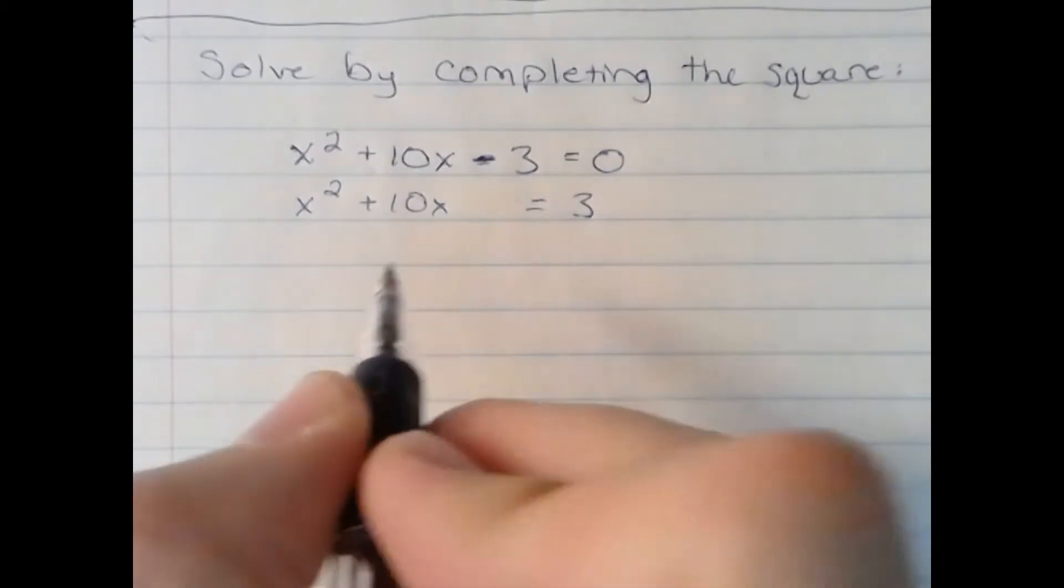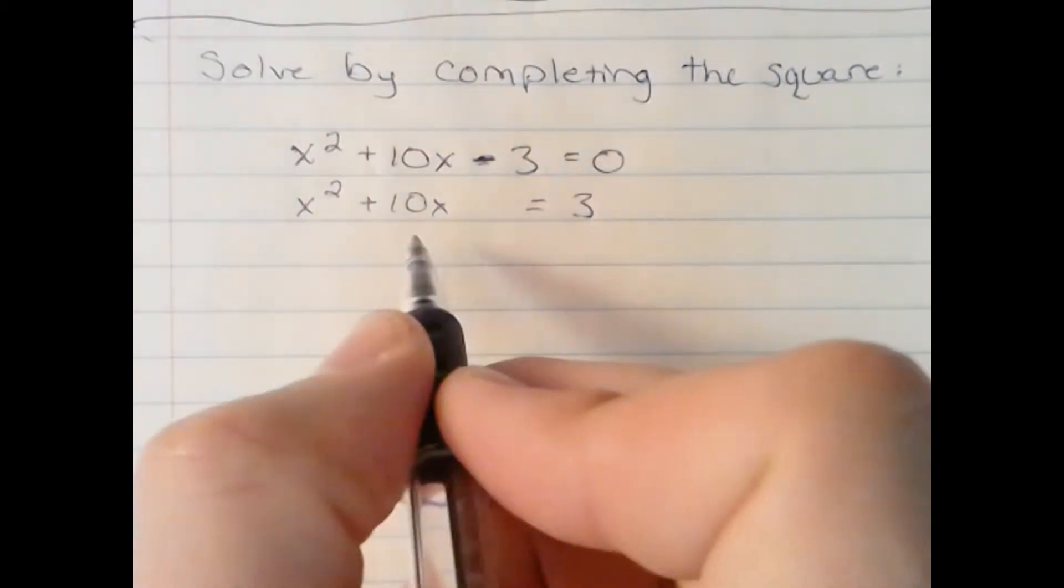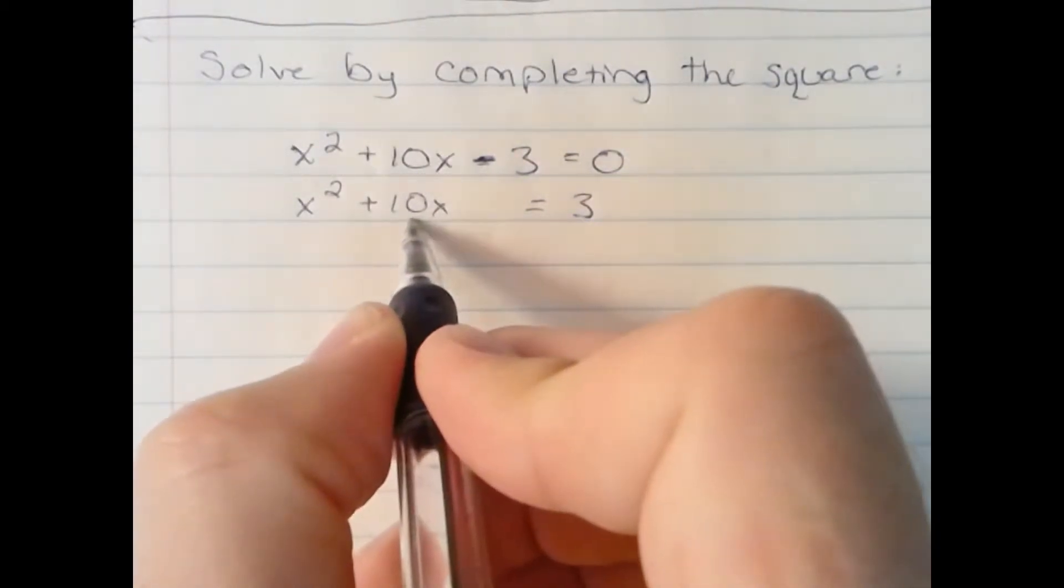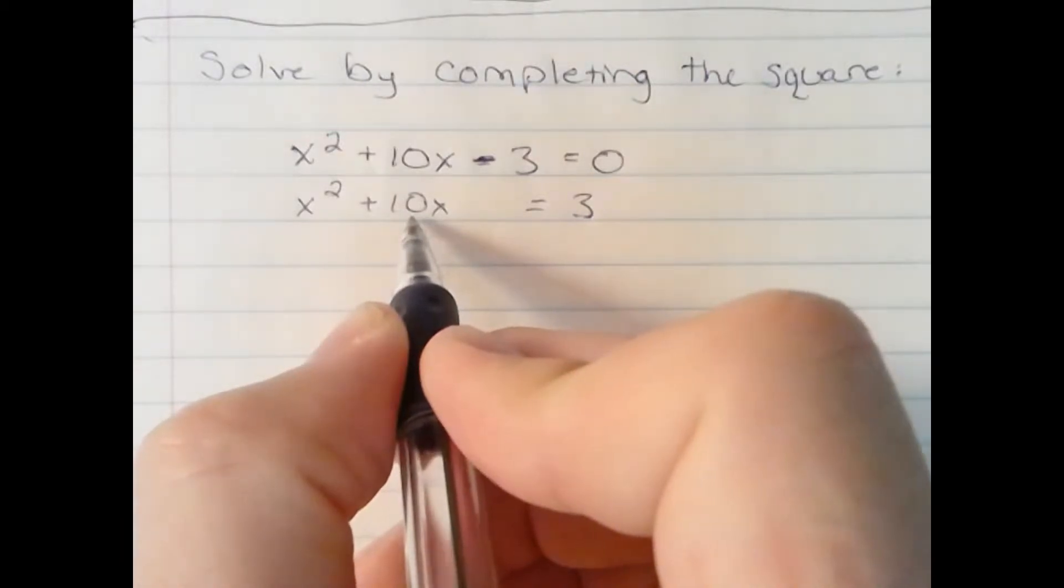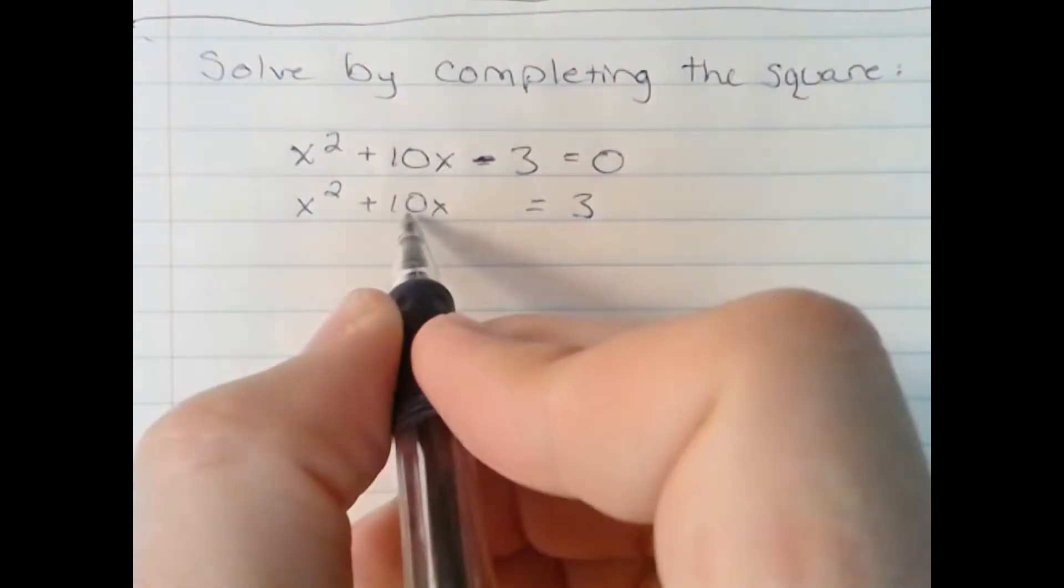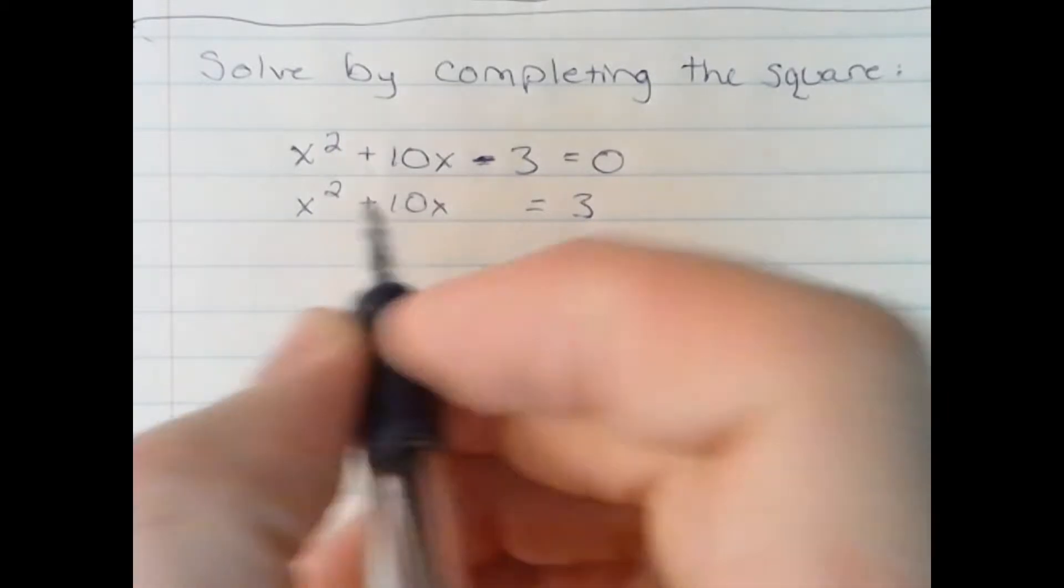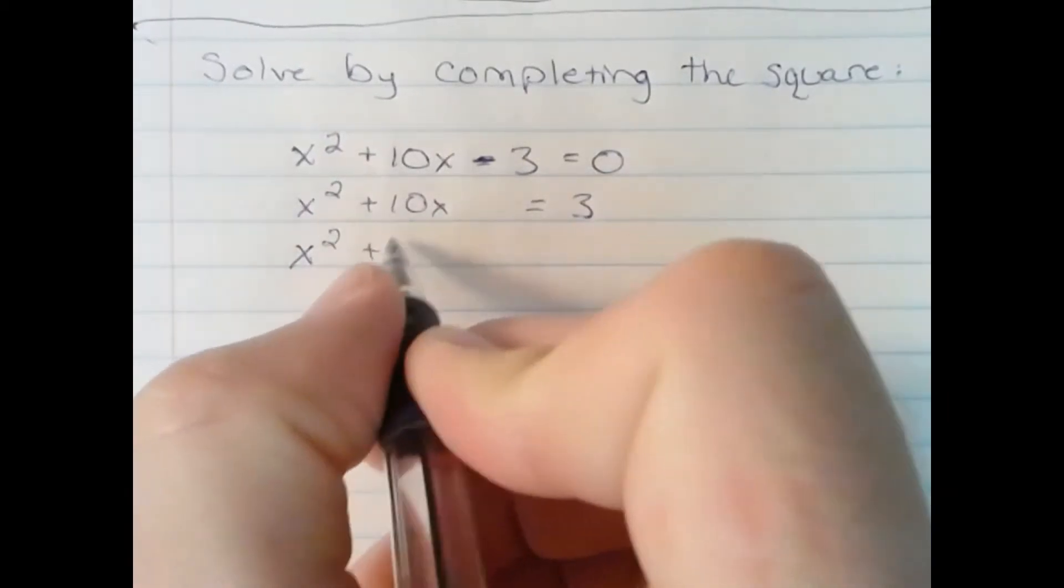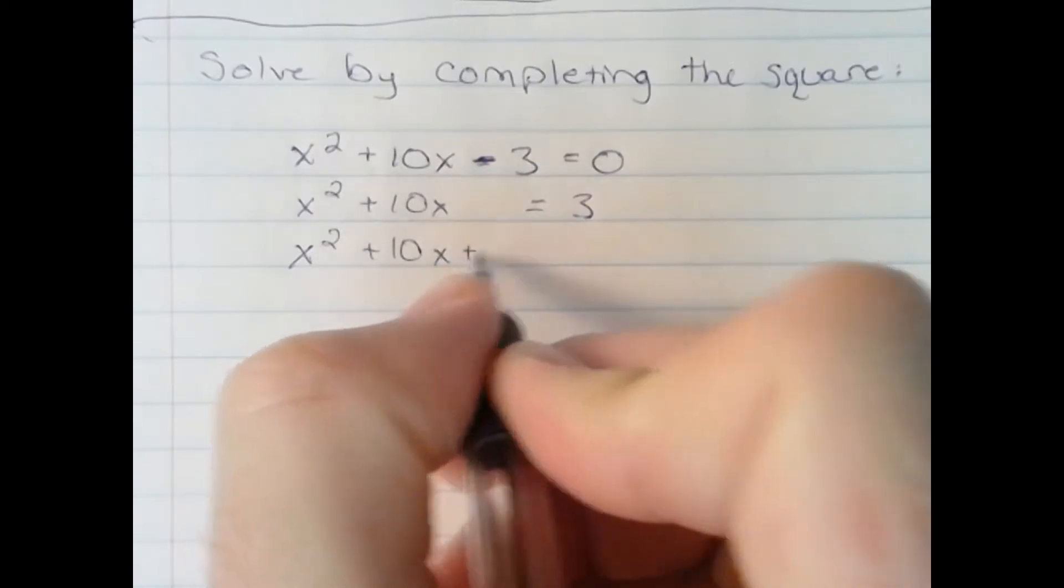Next, we're going to create a perfect square trinomial by taking half of this term and then squaring it. So, half of 10 is 5, 5 squared is 25. This gives me x squared plus 10x plus 25.